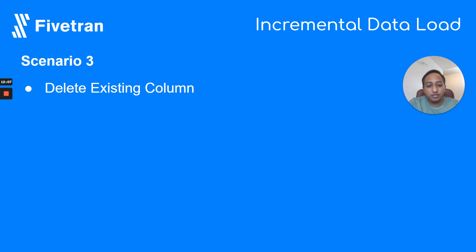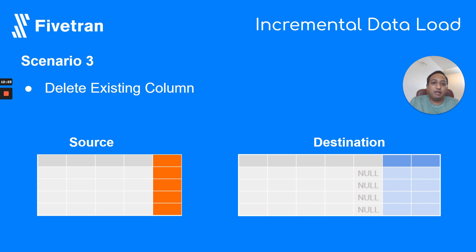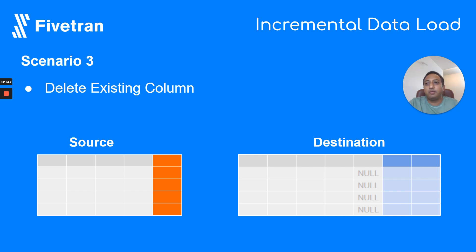What happens when we delete an existing column? Fivetran Teleport Sync acts differently here — when you delete an existing column at your source, Fivetran does not delete the column from the destination. Instead, it nullifies all the values in that column. This ensures it does not disturb any reports or dashboards that analysts are using, since the column still exists but its values are nullified.